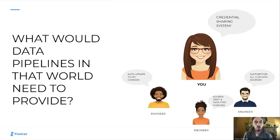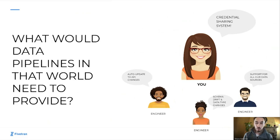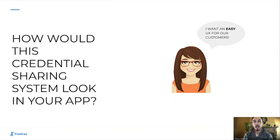What would data pipelines in that world need to provide? What have you learned from the experience where those pipelines didn't work? Your engineers are thinking: we need a solution that would automatically update these API changes happening in the source systems. Another is thinking about when data types broke and when new columns were added or removed — we need a solution that can automatically accommodate for those changes. A third calls out that the solution needs to support all of the data sources required for our predictions. And one thing not yet mentioned is a credential sharing system: how are you actually getting data from customers? Is it that you're asking customers for login credentials? What would that process look like inside your app? At the end of the day, you want this to be a very easy and pleasant user experience for your customers.